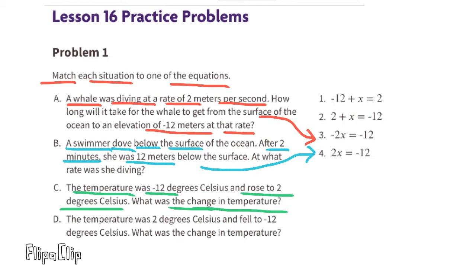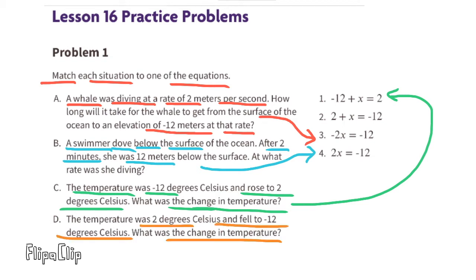Situation C: the temperature was negative 12 degrees Celsius and rose 2 degrees Celsius. What was the change in temperature? We're looking for an equation that represents a temperature of negative 12 degrees increasing an unknown amount to become 2 degrees Celsius. Situation C is a perfect match with equation 1.